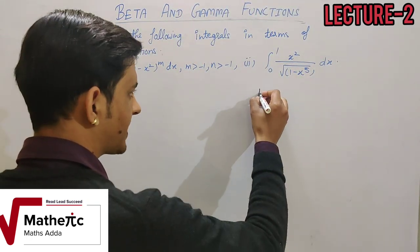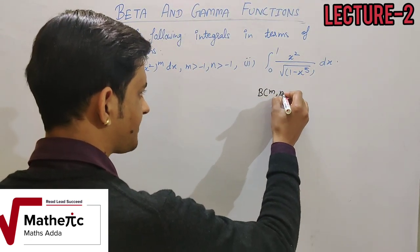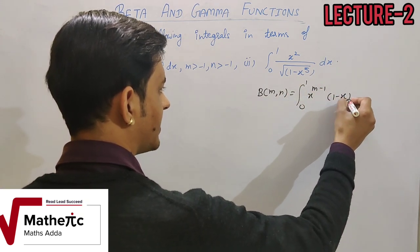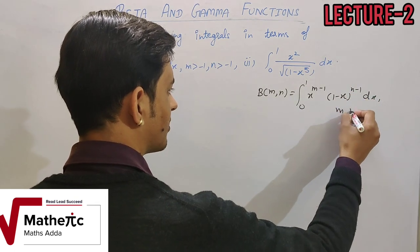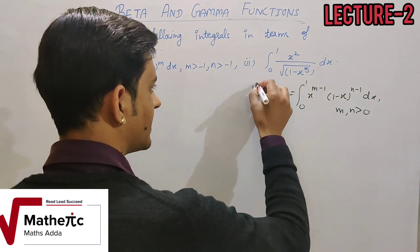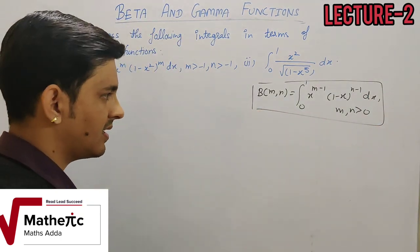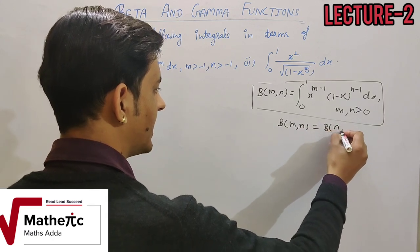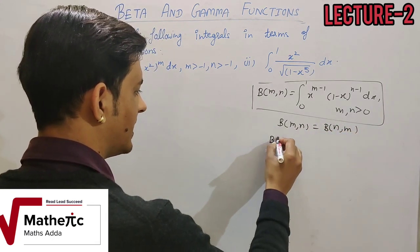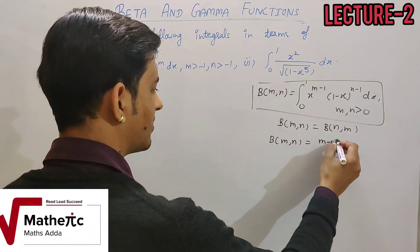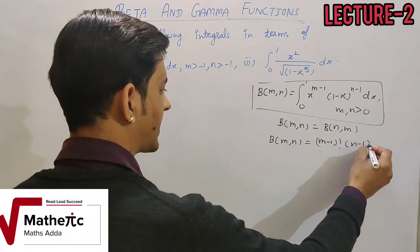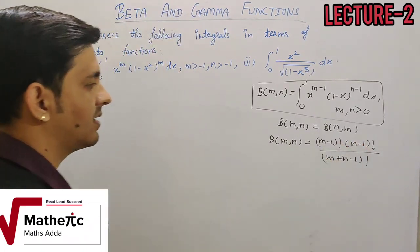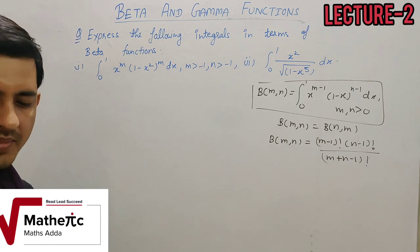The beta function is defined as the integral from 0 to 1 of x^(m-1) · (1-x)^(n-1) dx, where m and n should be positive. We saw the definition in the first video, proved that beta(m,n) = beta(n,m), and proved the factorial formula: beta(m,n) = (m-1)!(n-1)! / (m+n-1)!. This is the first video of beta function.